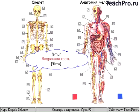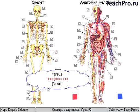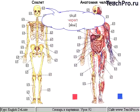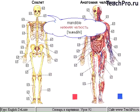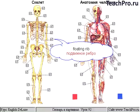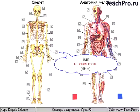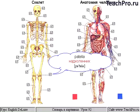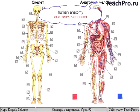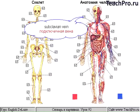Femur, tibia, tarsus, metatarsus. Skull, mandible, sternum, ribs, floating rib, spinal column, ilium, sacrum, patella, fibula. Human anatomy: common carotid artery, subclavian vein.